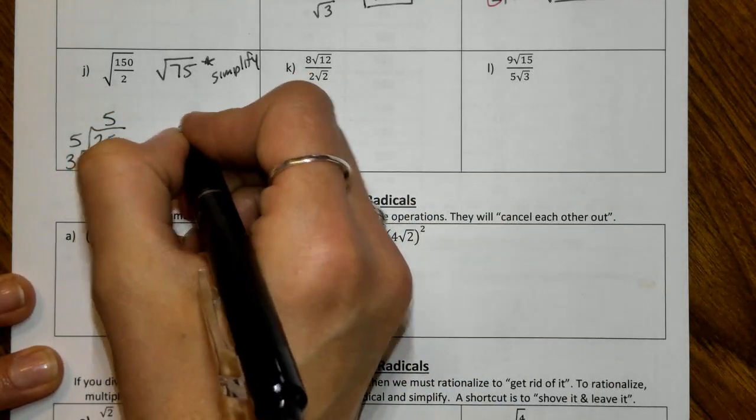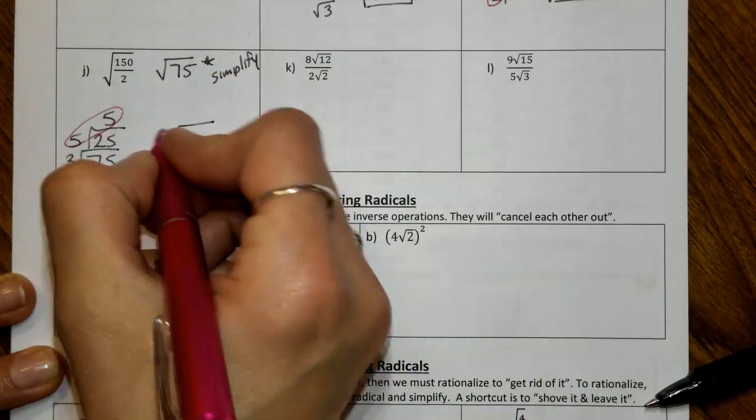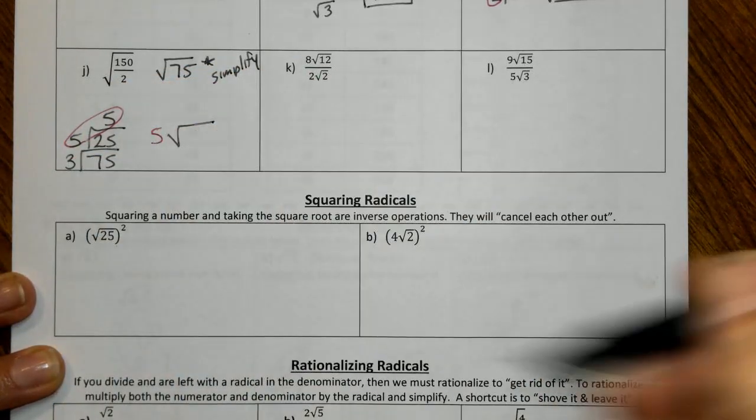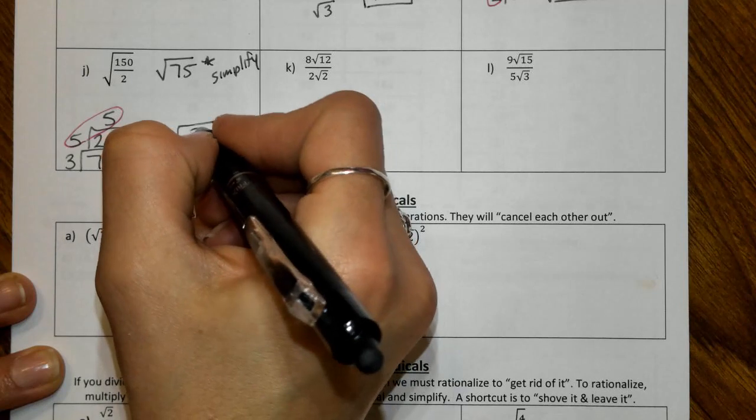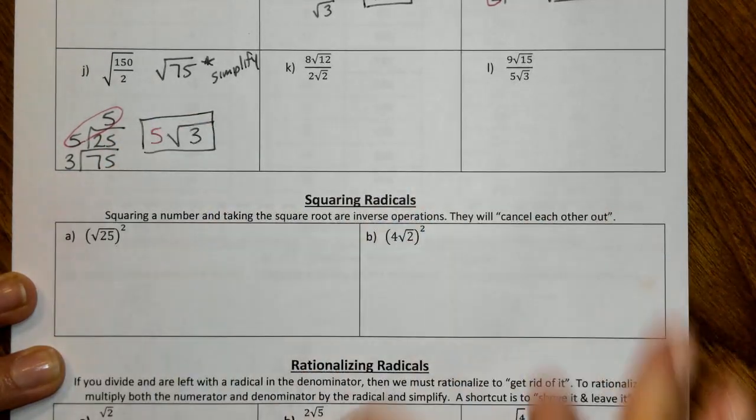So here, our radical house, we have a pair of partners right here, the 5. That little lonely 3 has to stay inside, and so we wind up with 5 square root of 3.